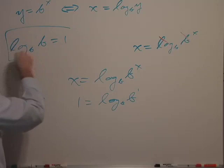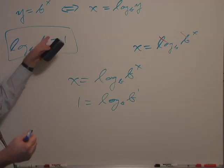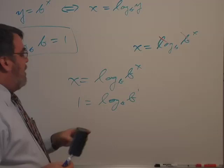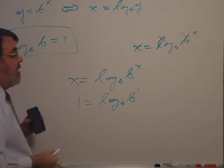The log base b of b equals to 1. Now, that's a property that holds no matter what the base is. You know, if this is base 3, log 3 base 3 is 1. Log 7 base 7 is 1. So, that's a constant property. You can see it quite easily by just replacing x with 1, and you have this property.